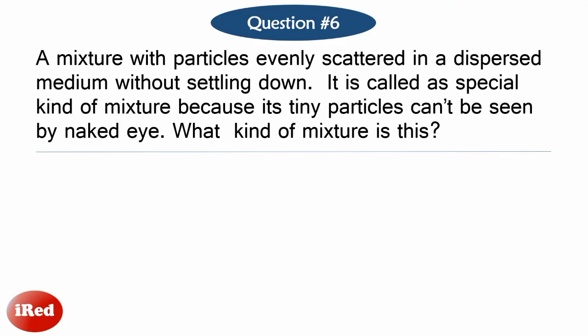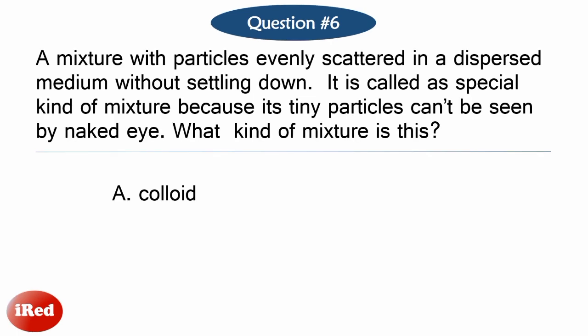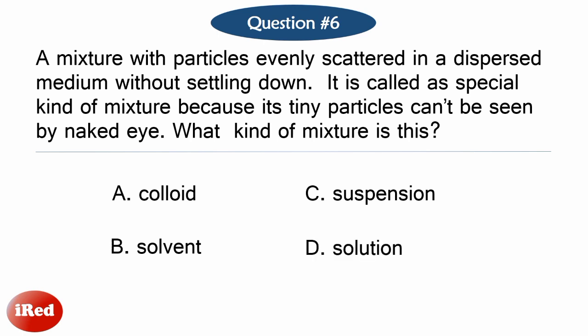Number six: A type of mixture with particles evenly scattered in a dispersed medium without settling down. It is called a special kind of mixture because its tiny particles can't be seen by the naked eye. What kind of mixture is this? Letter A: Colloid. Letter B: Solvent. Letter C: Suspension. Or letter D: Solution.